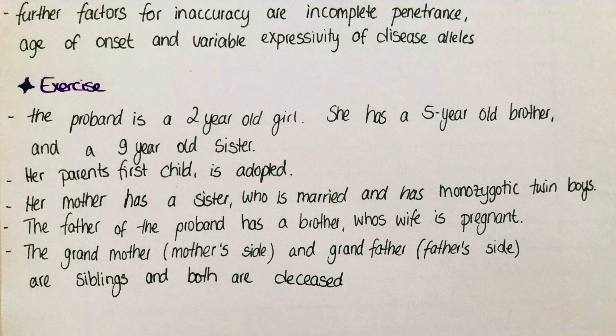The grandmother on the mother's side and the grandfather on the father's side are siblings, and both are deceased. Since the grandparents of the proband are related and their children are married to each other, we must remember to indicate in the chart that there is a consanguineous relationship — a relationship between people related in the first or second degree.